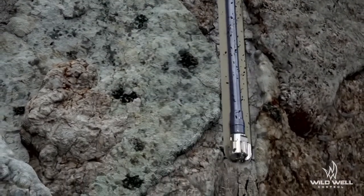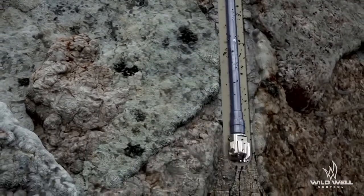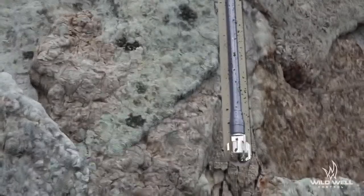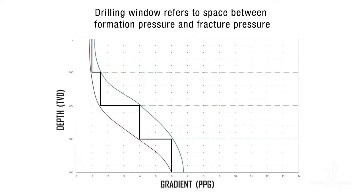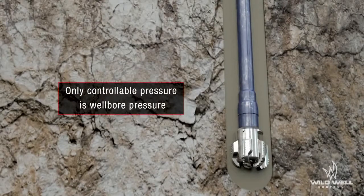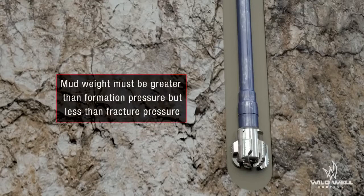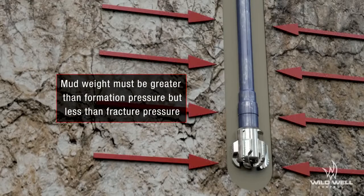Each formation has a drilling window that drillers must be aware of as they drill deeper. A drilling window is the space between formation pressure and fracture pressure. Formation and fracture pressures are beyond your control, but what is in your control is hydrostatic and bottom hole pressure. Drilling fluid must be heavy enough to hold back formation pressure, but not so heavy that it causes the formation to fracture.